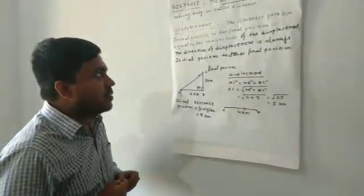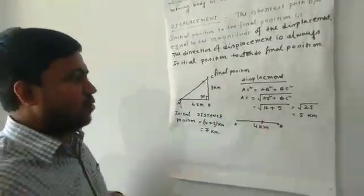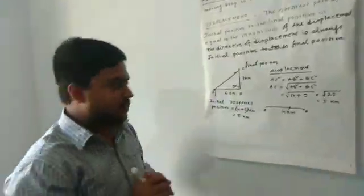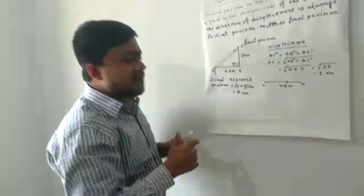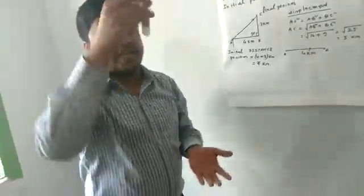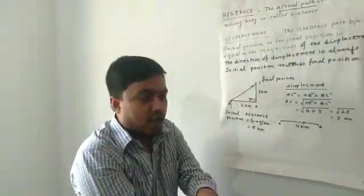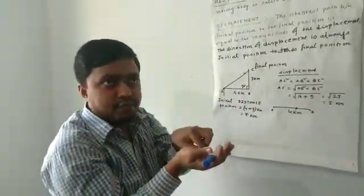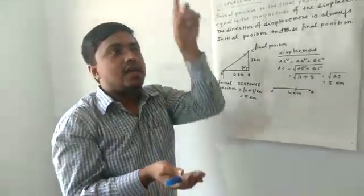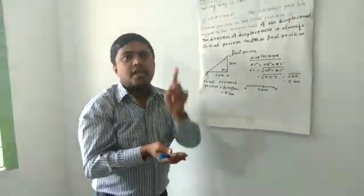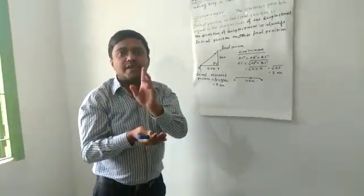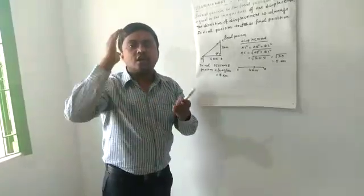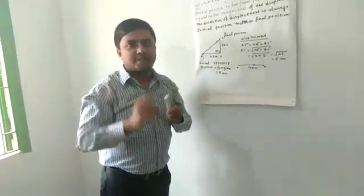Some important points about displacement: if the particle comes back to the same position — suppose an object is thrown and after some time comes back to the same position — then the value of displacement will be zero. If the initial position and final position coincide with each other, the value of displacement will be zero.